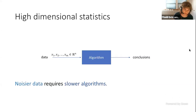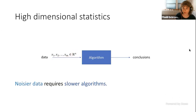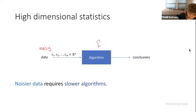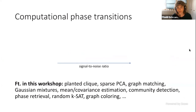In high-dimensional statistics, many times we find ourselves in the following setting. We have data — this data maybe takes the form of m samples and n dimensions, and we think of m and n as going to infinity. We want to feed this data into an algorithm and spit out conclusions. So you can think of problems like estimation and inference, or for the majority of this talk, the focus is going to be on hypothesis testing. Because we are optimists, we want to tolerate noisy data and still have our algorithms be fast. But sadly, it seems that oftentimes, noisier data requires slower algorithms.